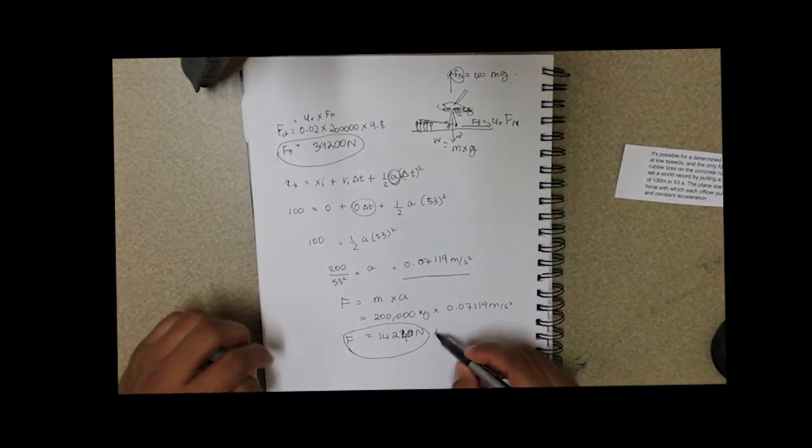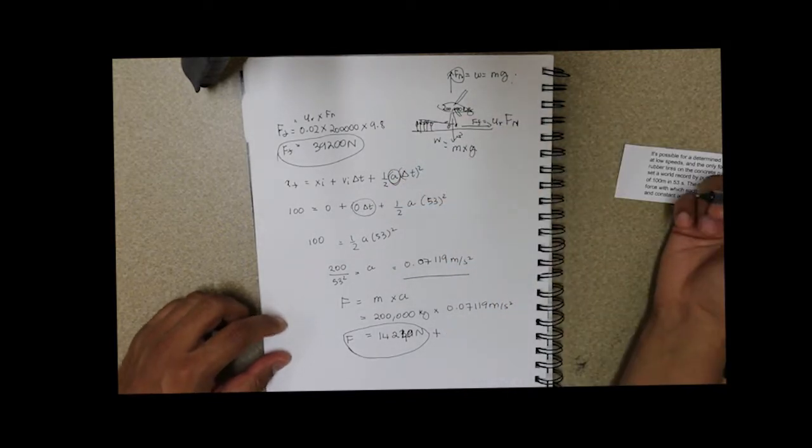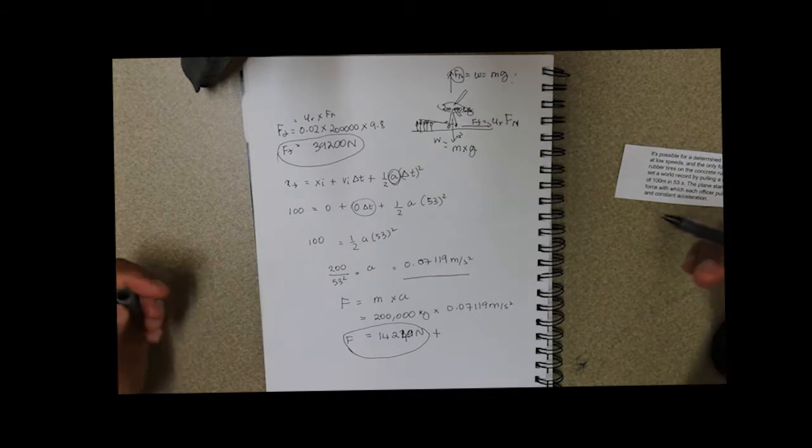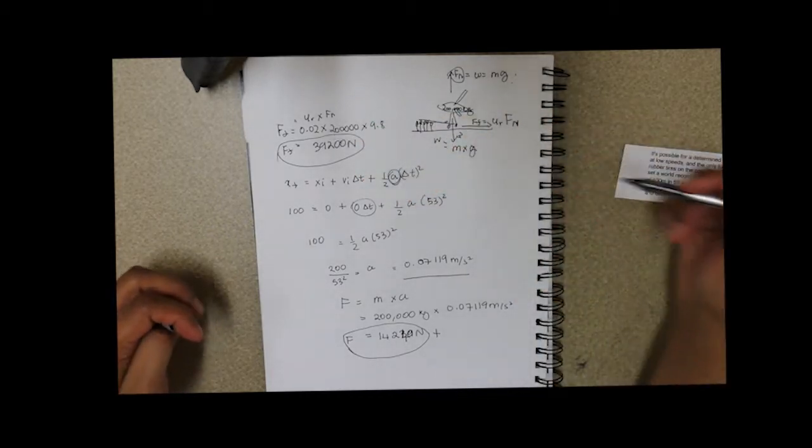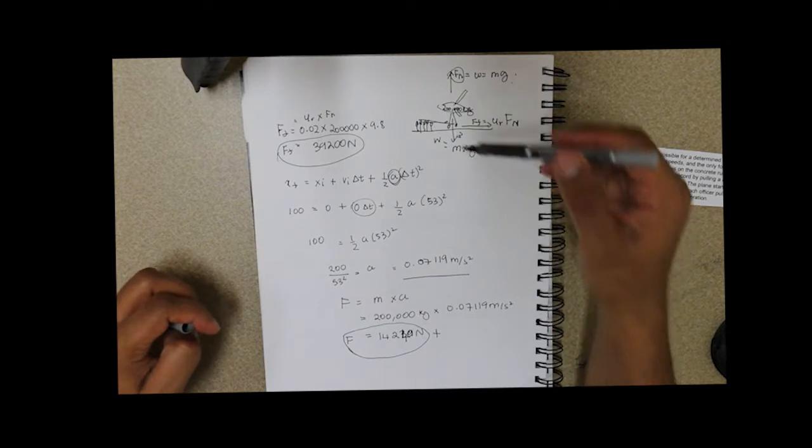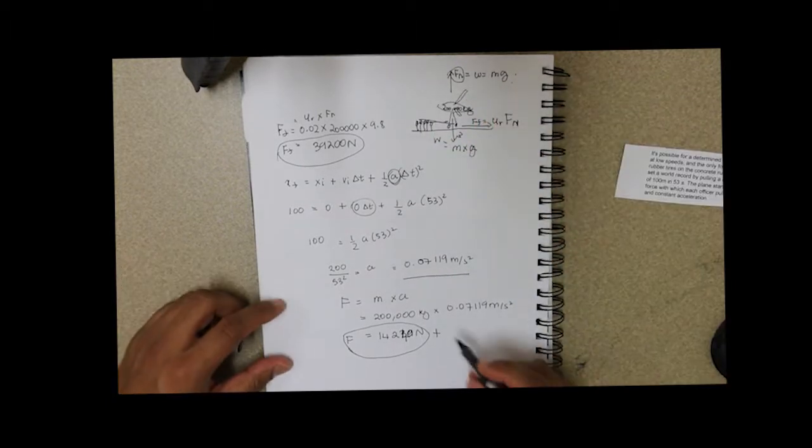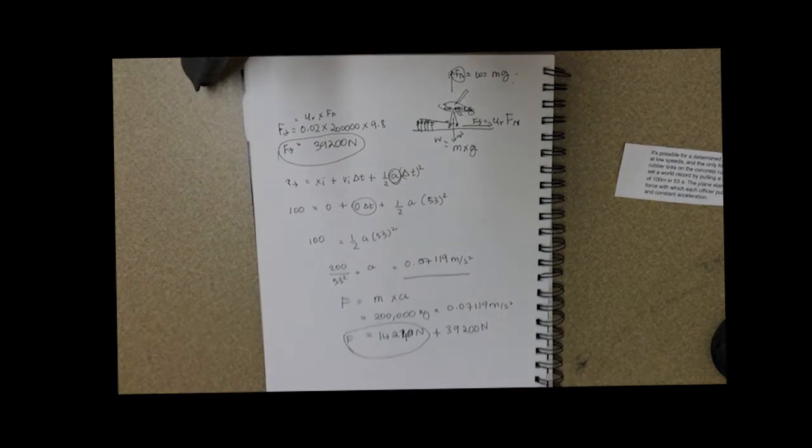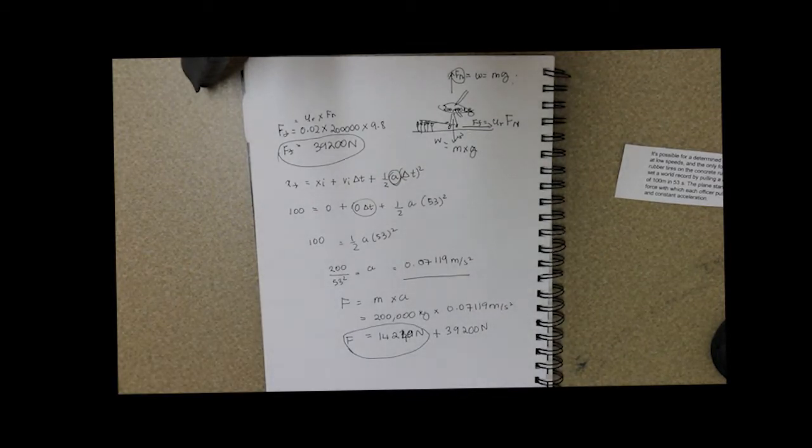So we add these two forces up, the force in the forward and force in the backward, because this is the force that the officers need to apply to overcome the force of friction and move it 100 meters in this direction. So we add these two forces up, plus 39,200.